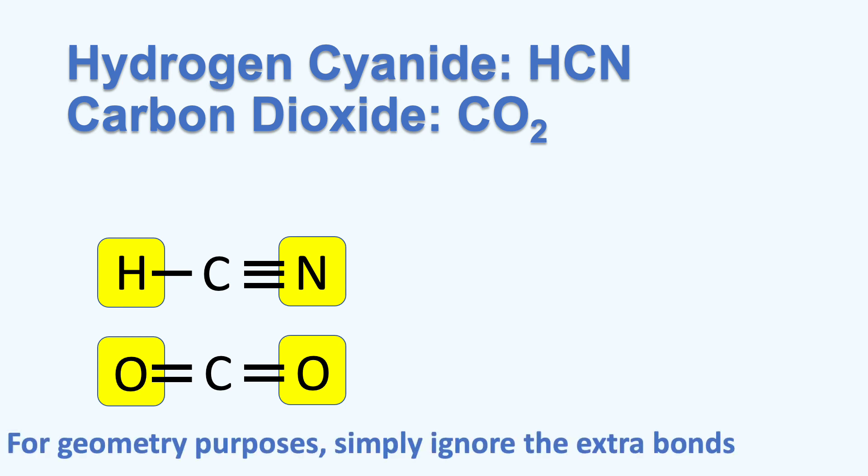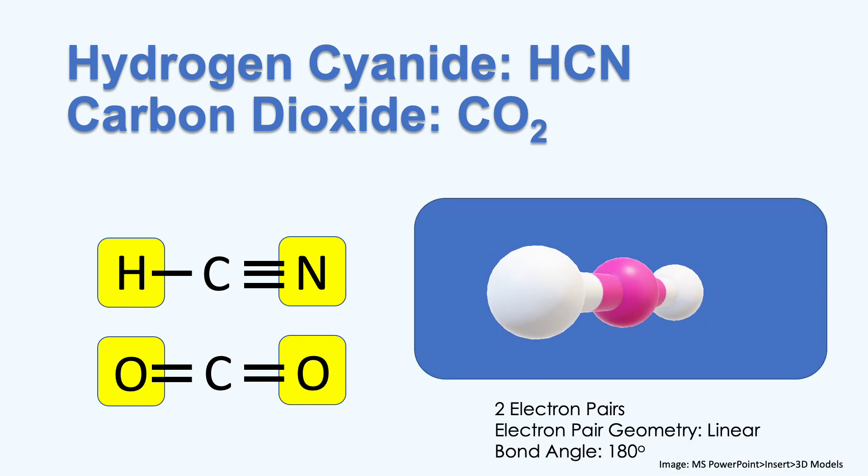Again, for geometry purposes, simply ignore the extra bonds, and there will be only two effective pairs of electrons. Here, two electron pairs gives an electron pair geometry of linear with a bond angle of 180 degrees.